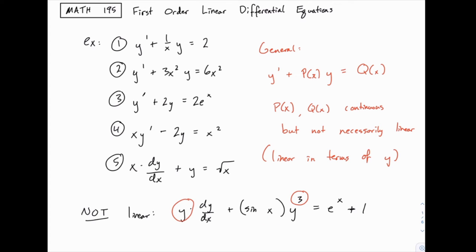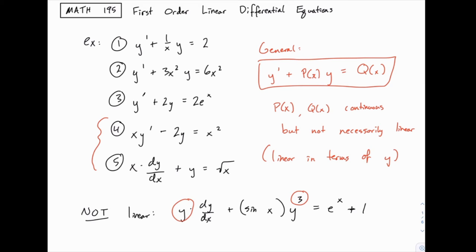The fact that you have y times dy/dx and y cubed — those break the structure of a first-order linear equation. Now, examples 4 and 5 don't initially fit this form, but with a little bit of effort we can make them fit. Specifically, in each case, if we divide the entire equation by x, we would have the general first-order linear structure. Not every first-order linear problem looks like it to begin with, but if you can rearrange and divide by coefficients to get y prime plus some function of x times y equals some other function of x, then that's a first-order linear equation.